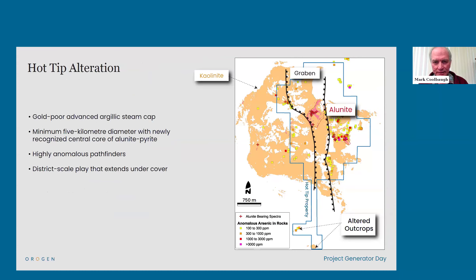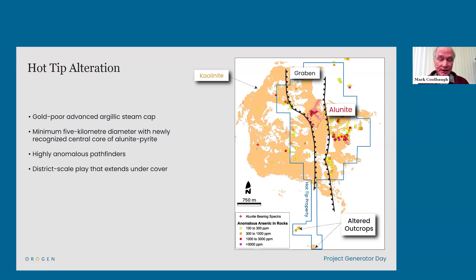In our mapping, we've spent time mapping the hydrothermal systems and validating the hyperspectral anomalies. We see in a number of cases the more intense alteration, including alunite, penetrating along structures into the basement carbonate rocks beneath the altered volcanics. There is some low-angle structure and motion along the boundary between volcanic rocks and Paleozoic rocks, but we see that the hydrothermal system is clearly post-dating that motion.